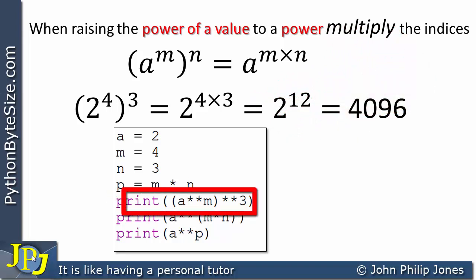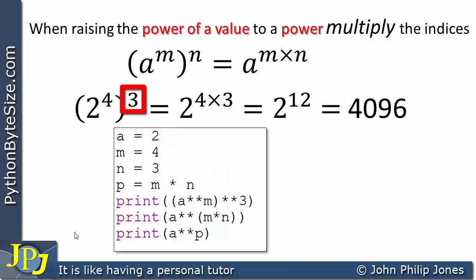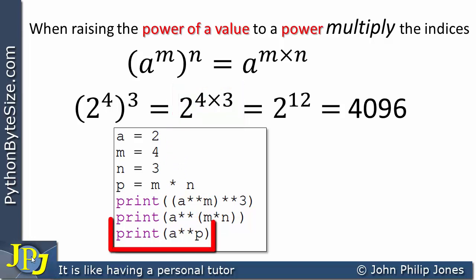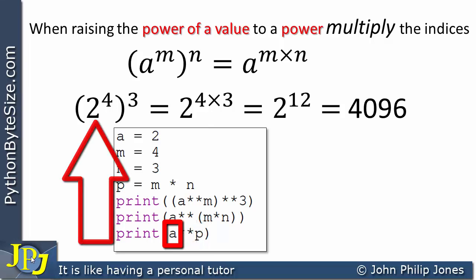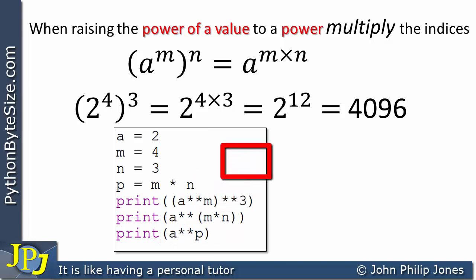This line will print the value of this calculation. a raised to the power m reflects this 2 raised to the power 4, and this is in brackets which we then raise to the power of 3, reflecting this bit. This line prints this calculation's result. We have a raised to the power of m times n, and this calculation reflects what you're looking at here. This last line prints the result of the base — which is 2 — raised to the power of p, where p is the multiplication of m times n, which clearly gives 12, reflecting 2 to the 12.